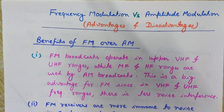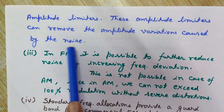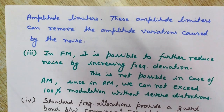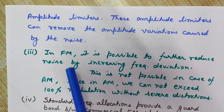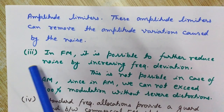The second advantage is that FM receivers are more immune to noise in comparison to AM receivers, since FM receivers may be fitted with amplitude limiters. These amplitude limiters can remove the amplitude variations caused by noise. So FM is better than AM when dealing with noise, both by operating at higher frequencies and by using amplitude limiters — which is not possible in amplitude modulation.